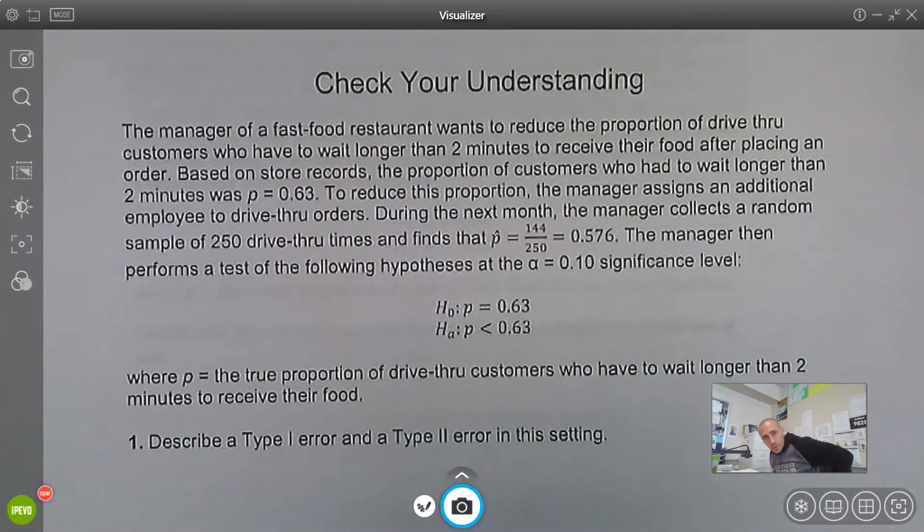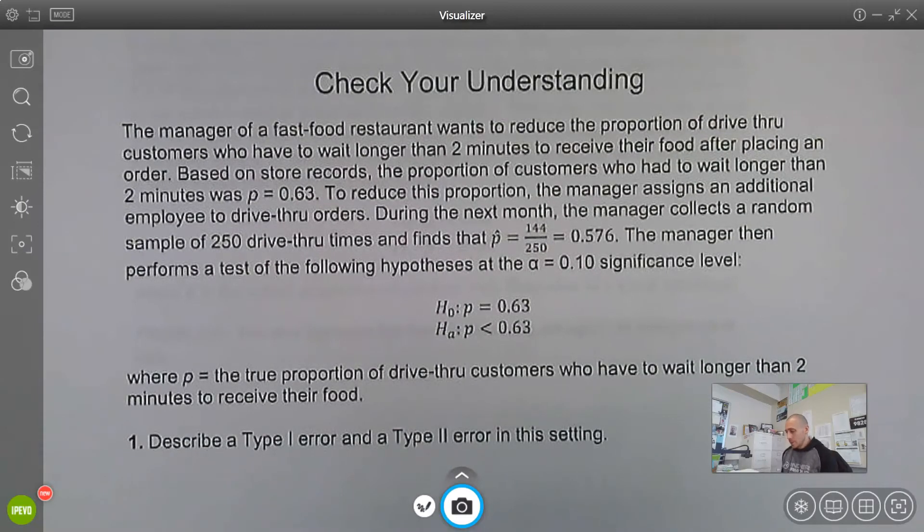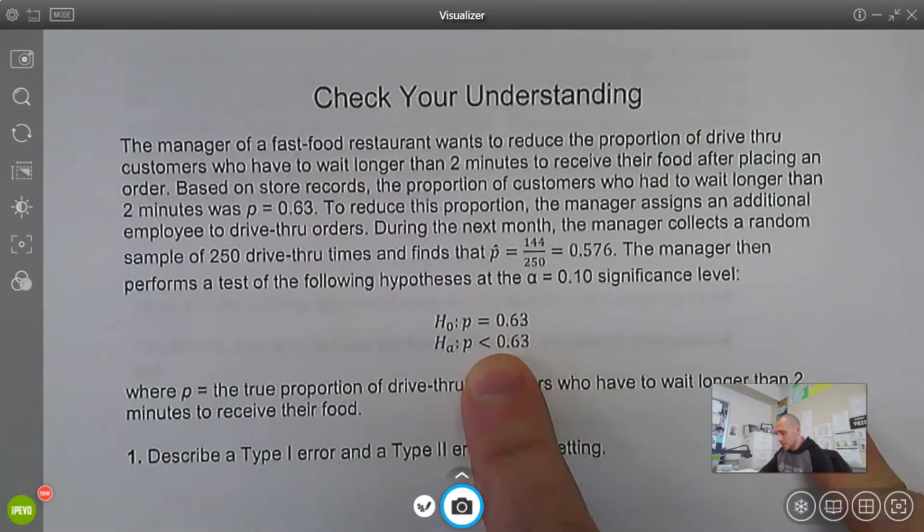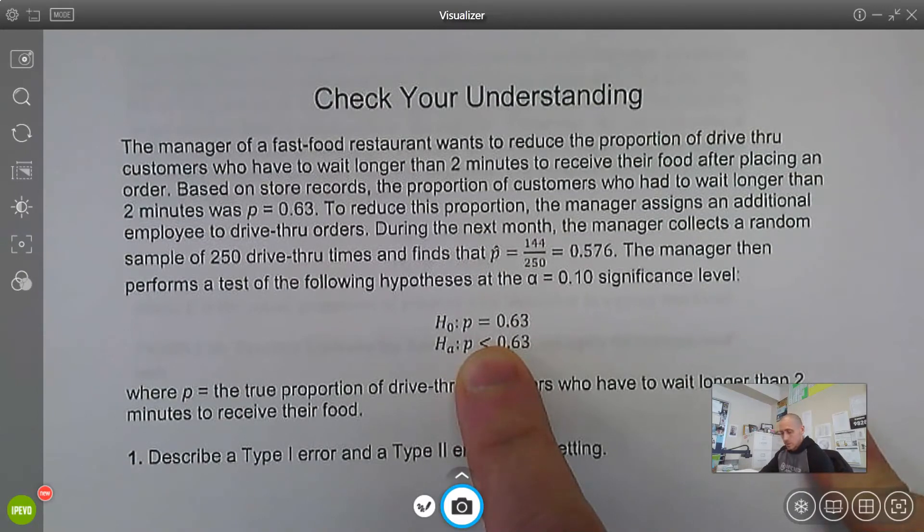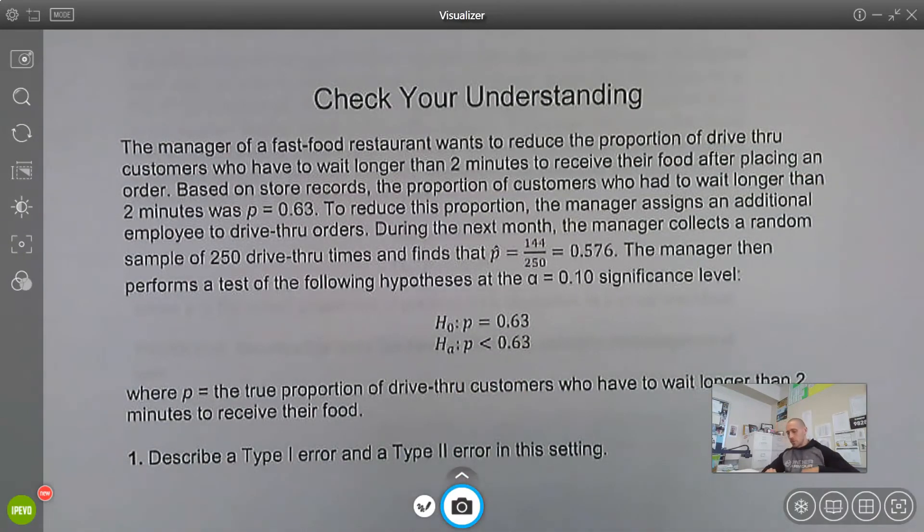So we have this scenario with the fast food restaurant. They want to reduce the proportion of drive-thru customers who have to wait more than two minutes. Makes sense. No one wants to wait for their food or drink. So we have this scenario. The null is that the proportion of customers who have to wait longer than two minutes is 63%, they're trying to reduce this.